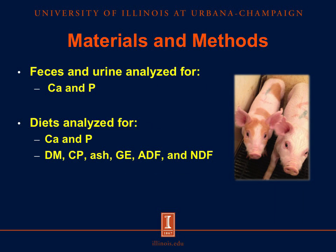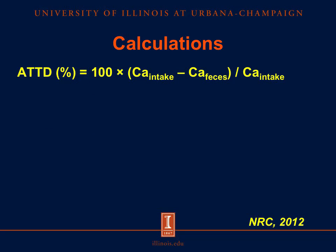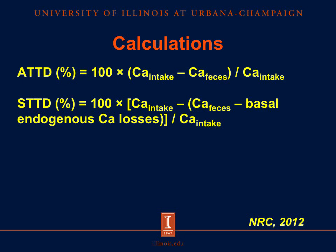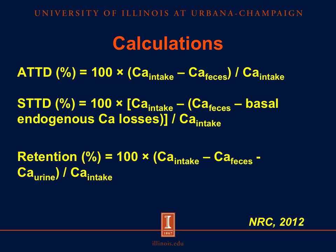Feces and urine samples were analyzed for calcium and phosphorus. Diets were analyzed for calcium and phosphorus in addition to dry matter, crude protein, ash, gross energy, ADF, and NDF. For this experiment, we used calculations from the NRC. Apparent total tract digestibility, as a percentage, was calculated as calcium intake minus calcium feces divided by calcium intake and multiplied by 100. The standardized total tract digestibility, expressed as a percentage, was calculated as calcium intake minus calcium feces minus basal endogenous calcium losses divided by calcium intake and multiplied by 100. Retention, expressed as a percentage, was calculated as calcium intake minus calcium in feces and urine divided by calcium intake and multiplied by 100. Similar equations were also used for the apparent total tract digestibility and retention of phosphorus.